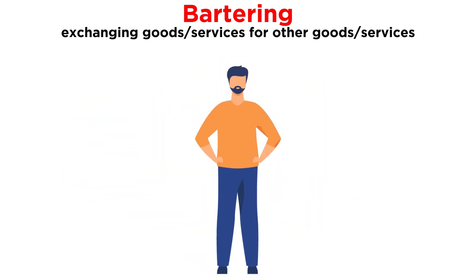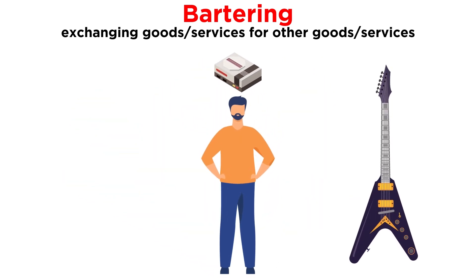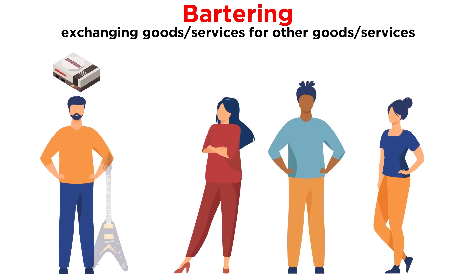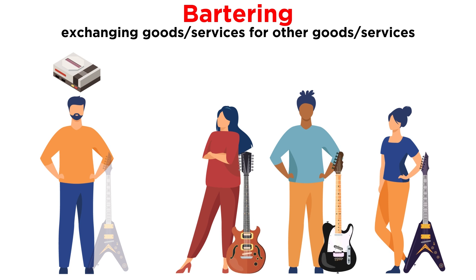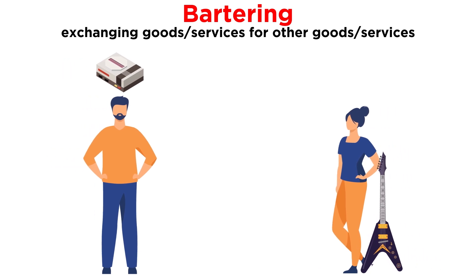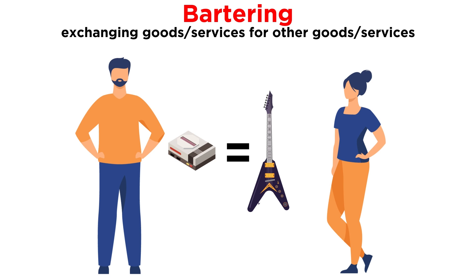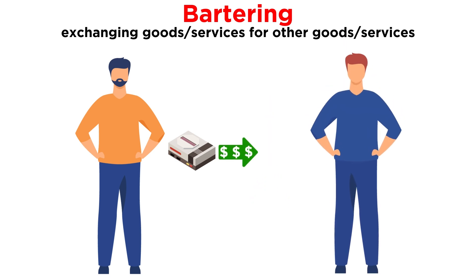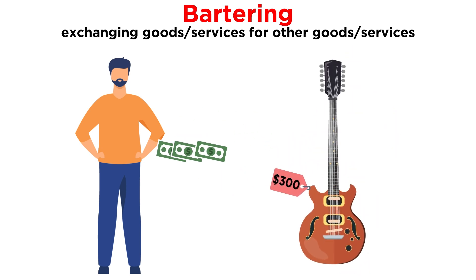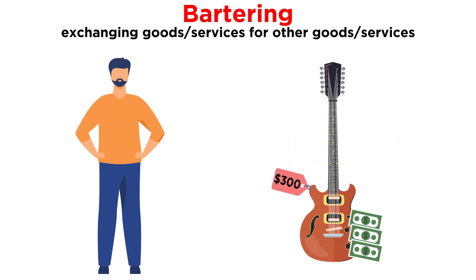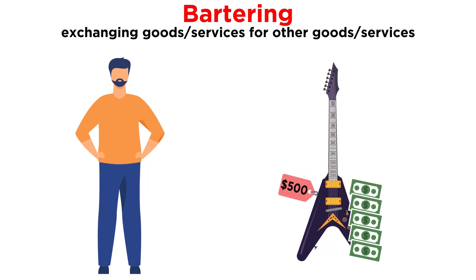Imagine if you wanted to trade your old video game system for an electric guitar. You would likely have a hard time making that exchange. First, you would need to find a person who wanted to both sell the type of electric guitar you wanted and buy the type of system you had. Second, this person would also need to agree that your system has the same value as their electric guitar. Now consider how much easier it would be if you could just sell your video games to anyone who wanted them for $300, then spend that $300 on an electric guitar — or save up additional money to get the guitar you really want.